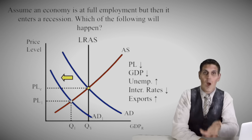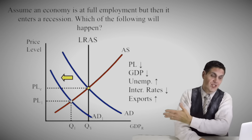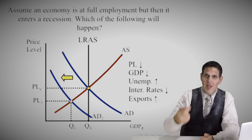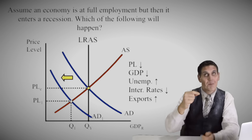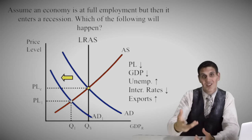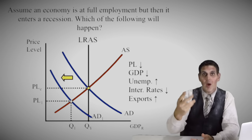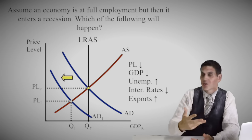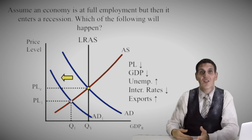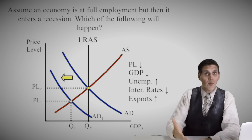If aggregate demand fell, price level would go down and quantity would go down, so unemployment would go up — we'd have a recessionary gap. When price level falls, interest rates will have a tendency to fall. And when price level goes down, other countries would want to buy our stuff because it's relatively cheaper, so exports would go up. Those things could all definitely happen — if you said that, you are right.